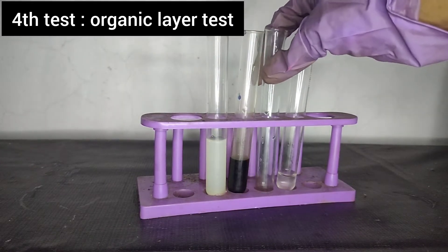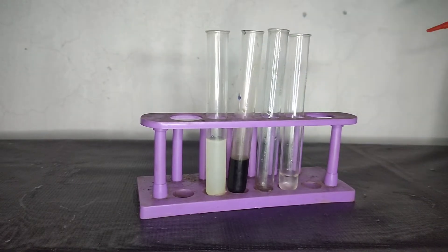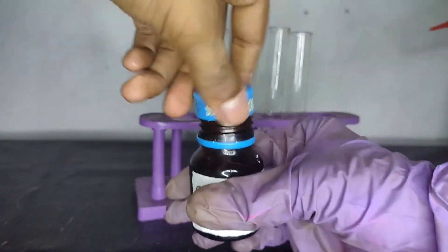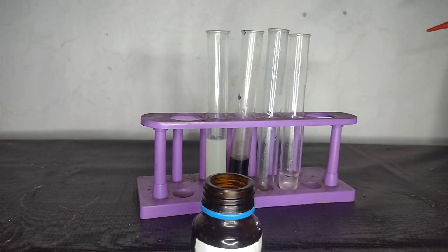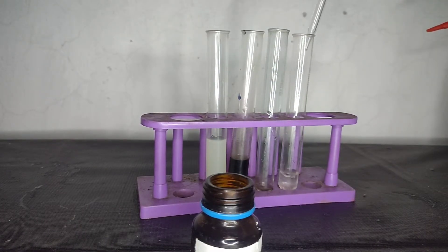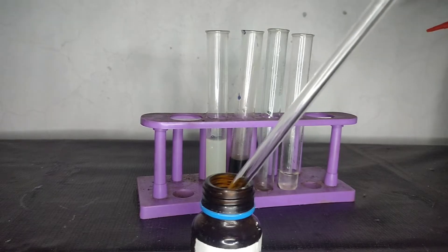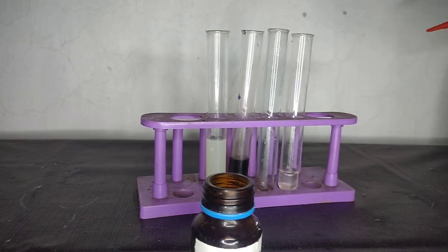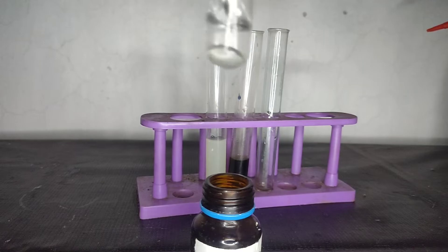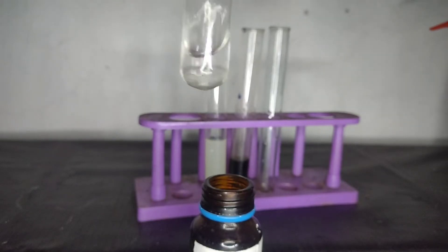The final test or the fourth test is the organic layer test, and this is my favorite among all these tests. So for that, you need soda extract. Now to this, we need to add an organic solvent such as chloroform or carbon tetrachloride. You can see that the chloroform sinks to the bottom and forms a separate organic layer below the solution.